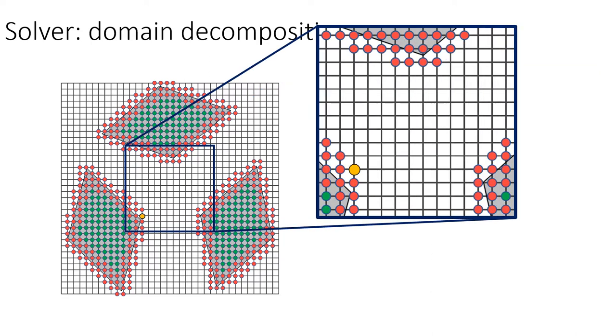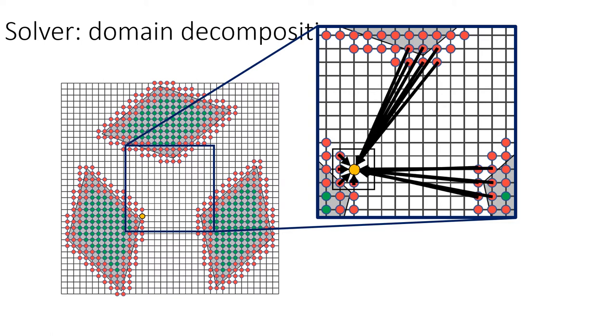For boundary texels, the neighborhood relations are more complicated. These texels are adjacent to nearby texels within the same chart, as well as distant texels in other charts. However, since the number of these texels is relatively small, we can update their values using a direct solver.